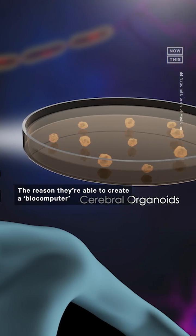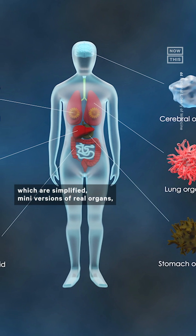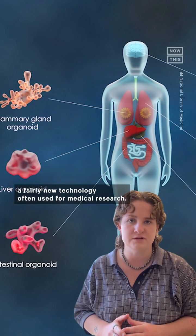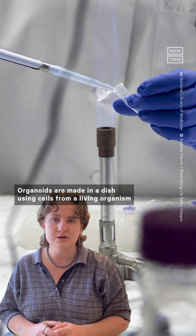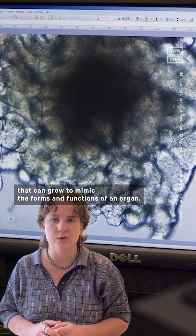The reason they're able to create a biocomputer is because of organoids, which are simplified mini versions of real organs, a fairly new technology often used for medical research. Organoids are made in a dish using cells from a living organism that can grow to mimic the forms and functions of an organ.